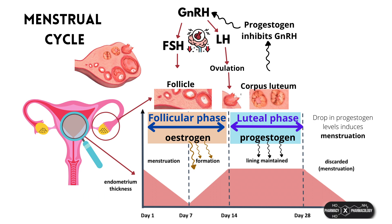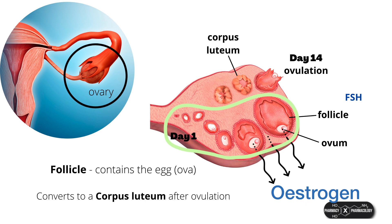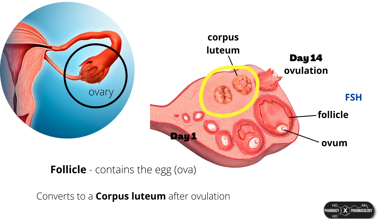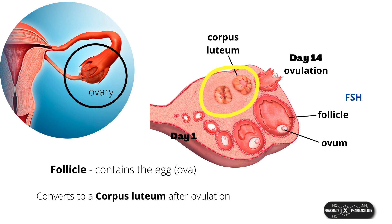GNRH releases FSH, and follicle-stimulating hormone, true to its name, will start off the menstrual cycle by activating a follicle in the ovaries. When a follicle is activated by FSH, it will grow and mature along with the ovum within it, secreting estrogen as it does so, typically for 14 days, which is when ovulation occurs. After ovulation, the empty structure is now called a corpus luteum. The main hormone the corpus luteum secretes is progesterone, which it will secrete for a further 14 days, after which it degenerates, unless pregnancy occurs.